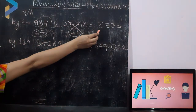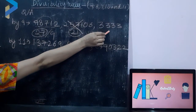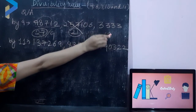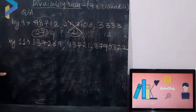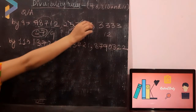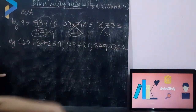Checking the next number: 3 plus 3 is 6, 6 plus 3 is 9, 9 plus 3 is 12. Is 12 divisible by 9? No, you all are right — 12 is not divisible by 9.